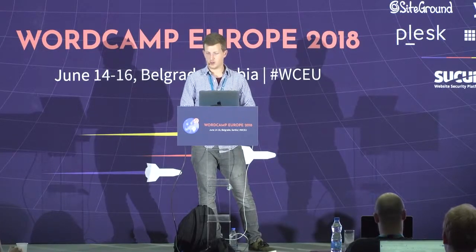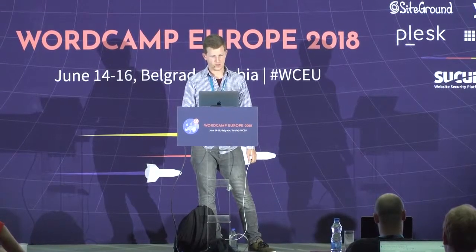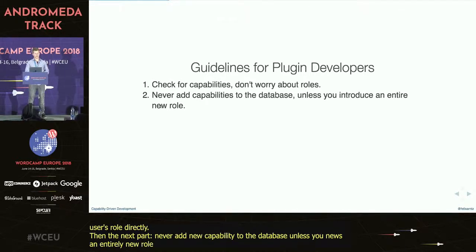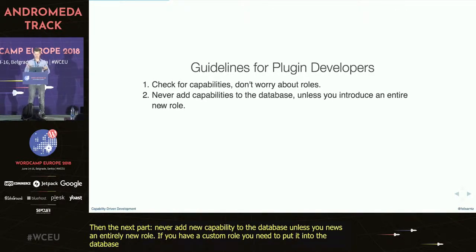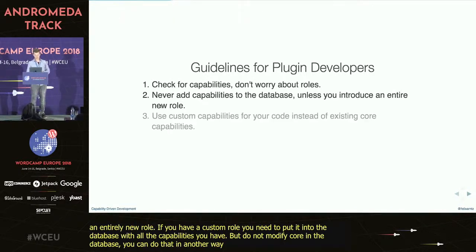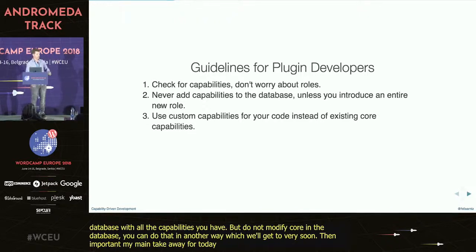For now, that's all about roles. We want to focus on capabilities, and usually as a plugin developer you don't need to worry about roles. Always check for capabilities when you want to see if a user has permissions — don't check the user's role directly. Never add new capabilities to the database unless you introduce an entirely new role. If you have a custom role, you need to put it into the database with all the capabilities it has, but don't modify existing core roles in the database. You can grant additional capabilities to core roles in another way, which we will get to very soon. And very importantly, my main takeaway for today: use custom capabilities wherever possible. Don't just use manage_options for your options screen — rather use something custom to your plugin, like manage_ct_options in our example.